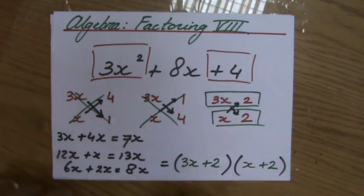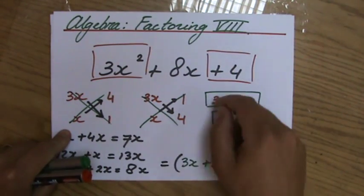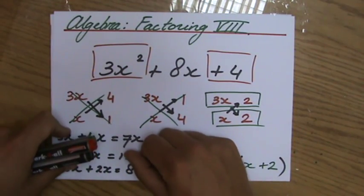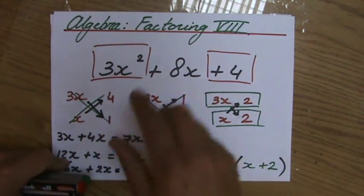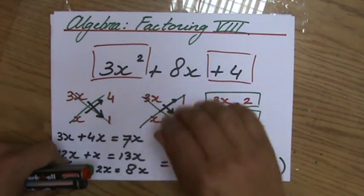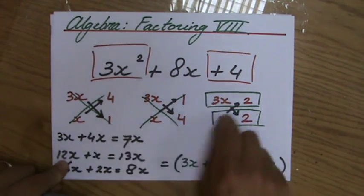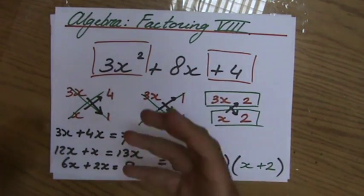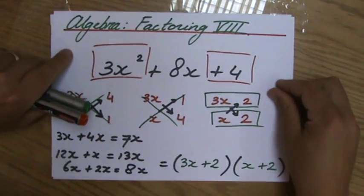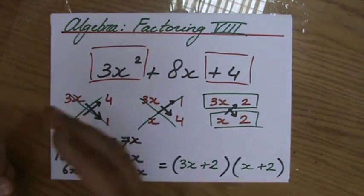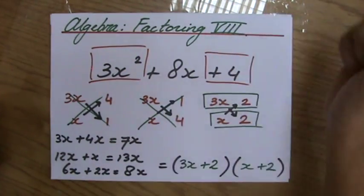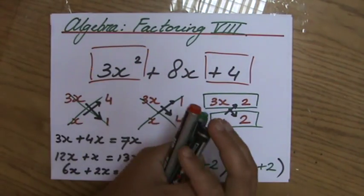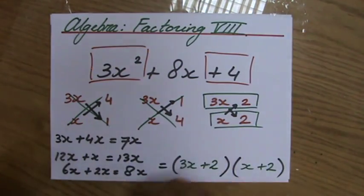If you are lucky, you started with this combination and had it in one go. If you're unlucky — like I was, well, I did it deliberately — it takes you in this case 3 turns before you find it. Don't get frustrated when it takes you a couple of turns — just continue. This is the way to do it when you have to do the extra normal factoring.